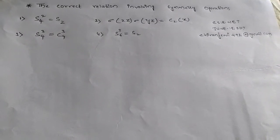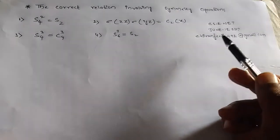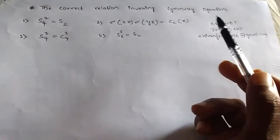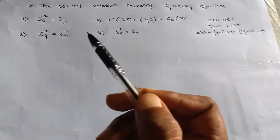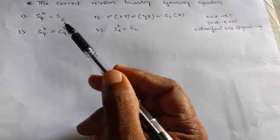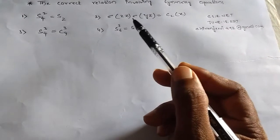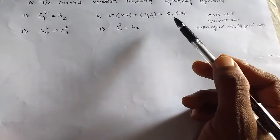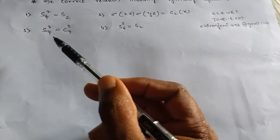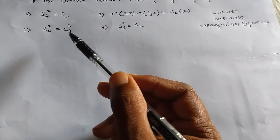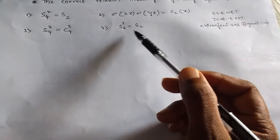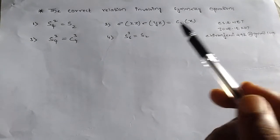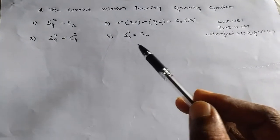Hi, this is your Chem Master. This question appeared in CSIR NET June 18, 2017. The question asks for the correct relation involving symmetry operations. The four options are: first, S4² = S2; second, σxz · σyz = C2x; third, S4³ and C4³; fourth, S6³ = S2. We have to find which symmetry operation relations are correct.